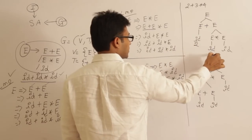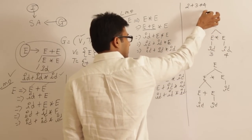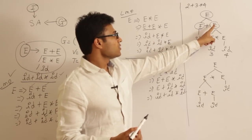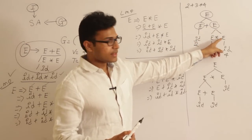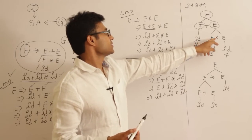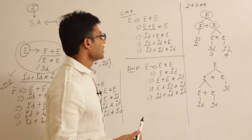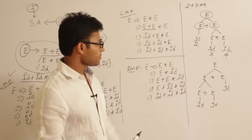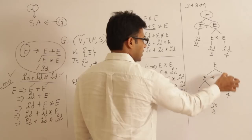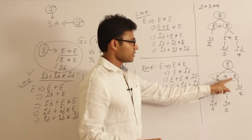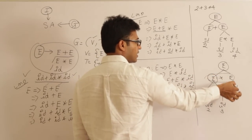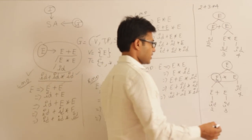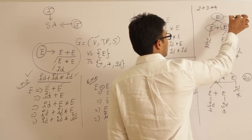Consider the string 2 + 3 * 4. The correct answer is 14 (because 3 * 4 = 12, then 12 + 2 = 14). Using the first parse tree, multiplication is evaluated first, giving 14. Using the second parse tree, addition is evaluated first (2 + 3 = 5), then multiplied by 4, giving 20. So the two parse trees produce different results — 14 and 20.